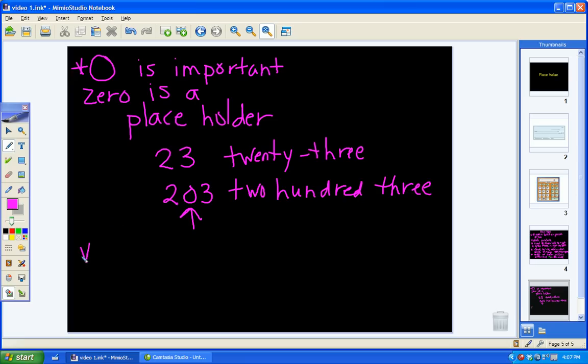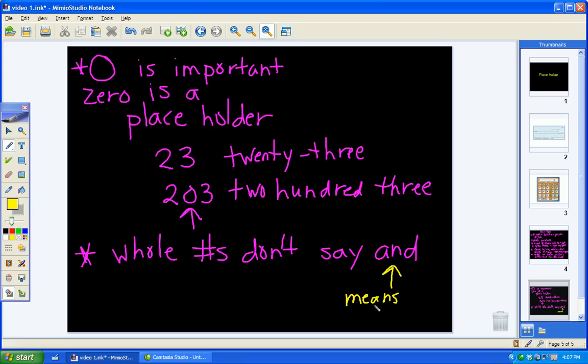Another thing to remember is when you're saying a whole number, you don't say and. Because and actually represents the decimal in math. And means the decimal point.